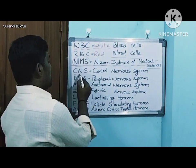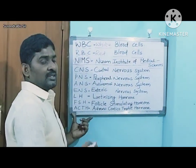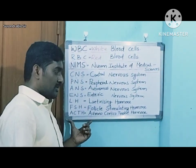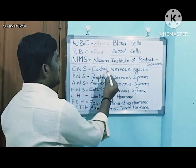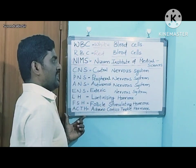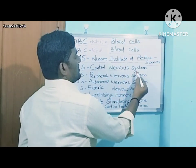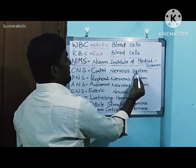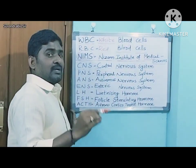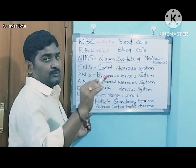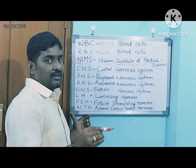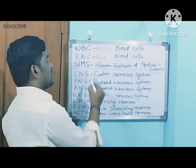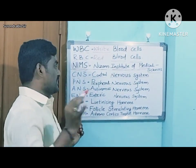The next chapter is Chapter 5, Coordination. Here we have CNS — Central Nervous System, which includes the brain and spinal cord. Brain and spinal cord together are called CNS — Central Nervous System.